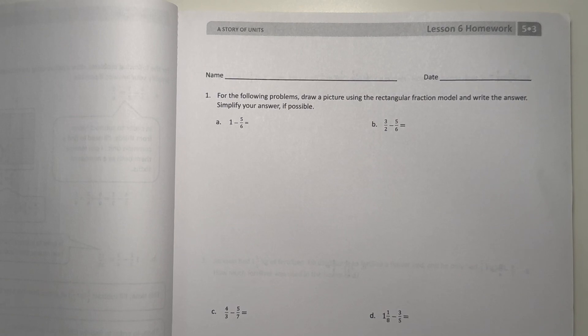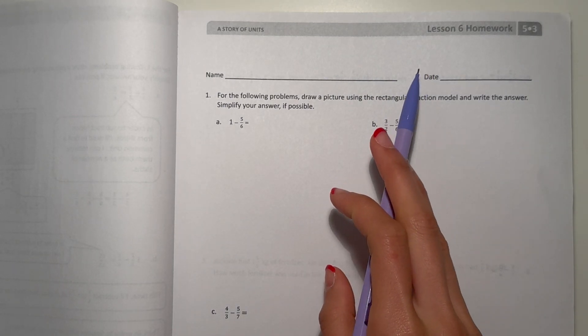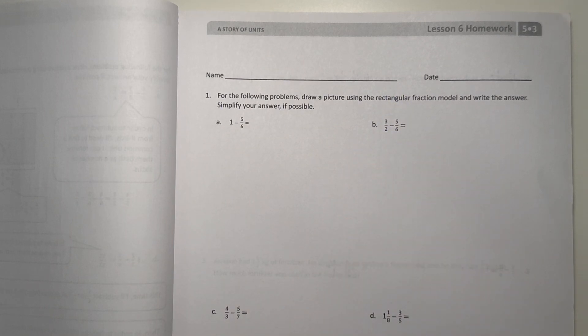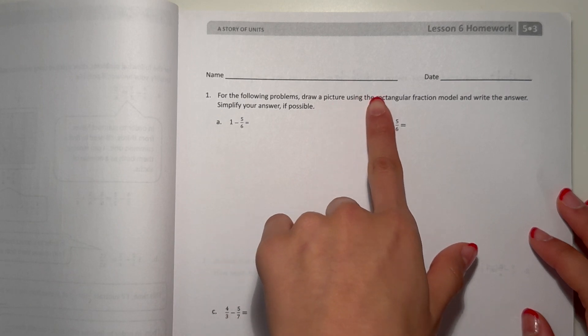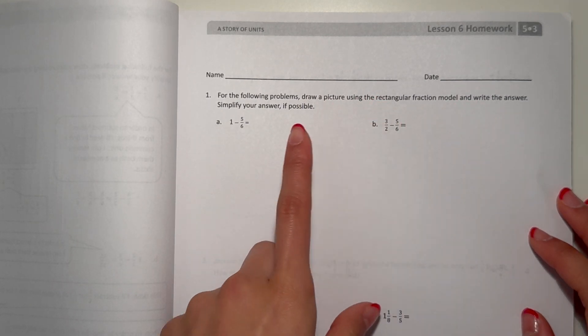Hey guys, today I'm doing the Eureka Math Grade 5 Module 3 Lesson 6 homework, so let's get started. Number one: for the following problems, draw a picture using the rectangular fraction model and write the answer. Simplify your answer if possible.